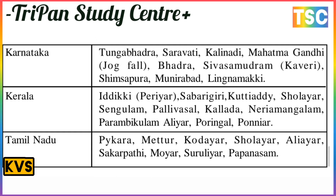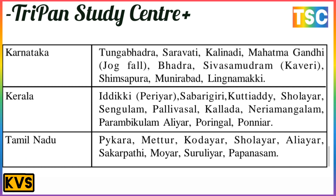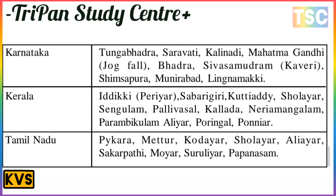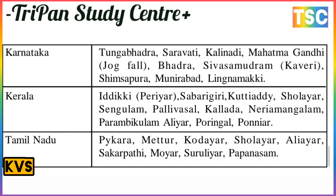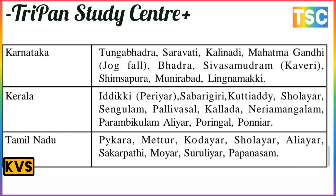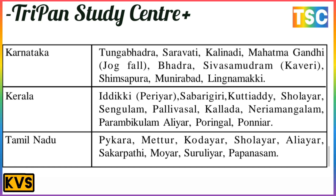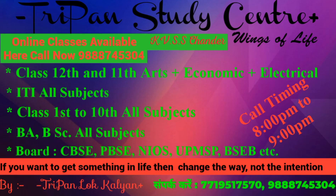Karnataka has Sharavati, Kallinda, Mahatma Gandhi, and Jog Falls among others. Kerala has Idukki, Periyar, and Sabarigiri. Tamil Nadu has Mettur, Kundah, Bhavani, Aliyar, Sarkaria, Hathikund, and Papanasam.